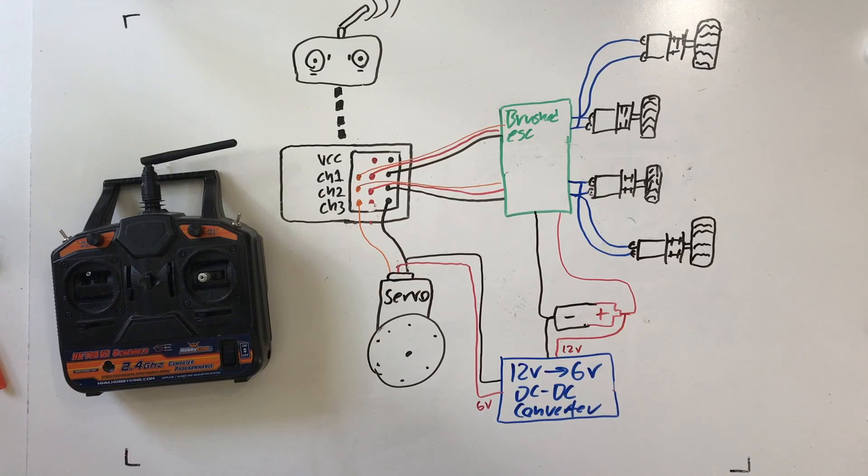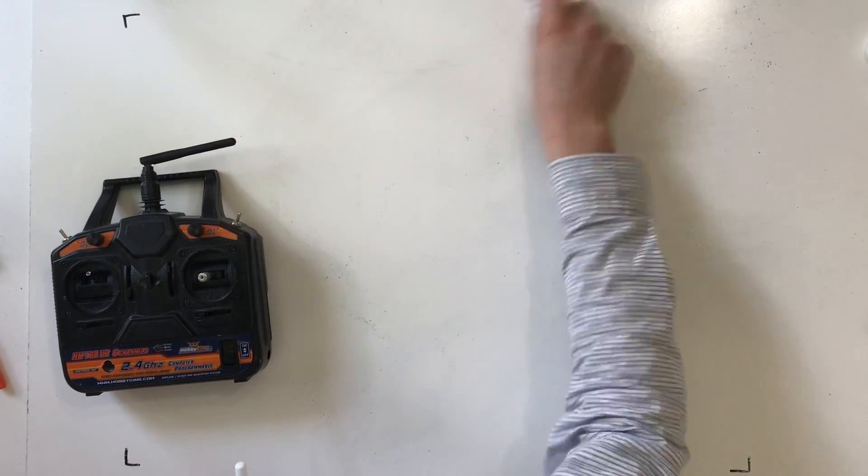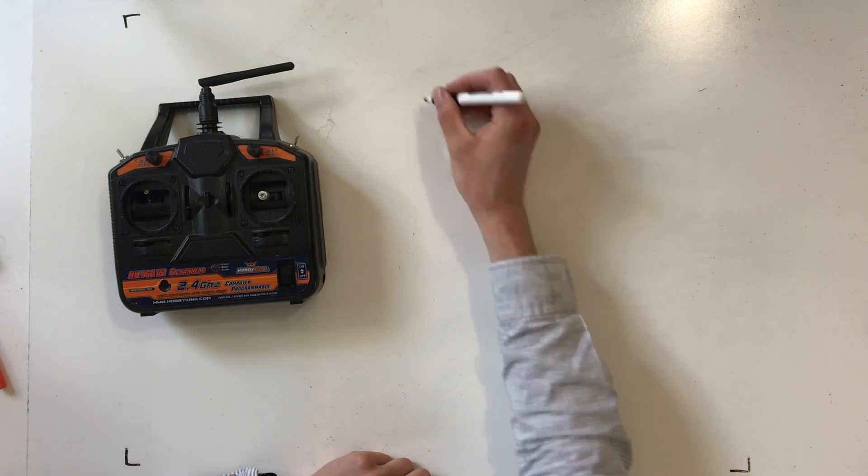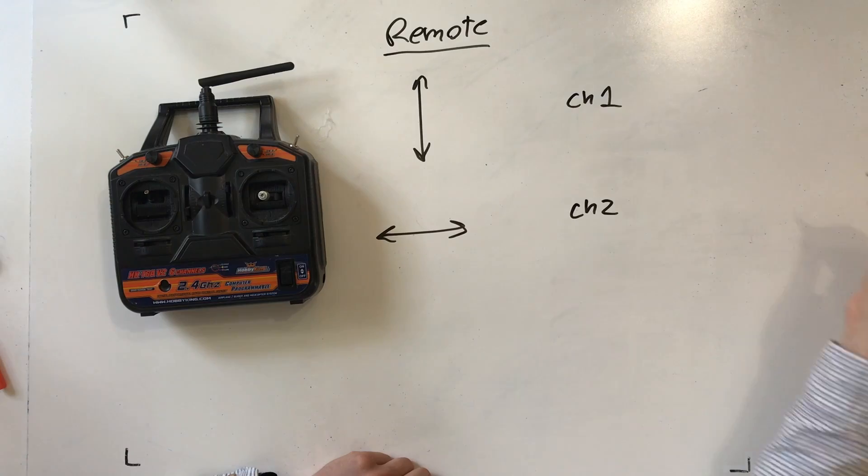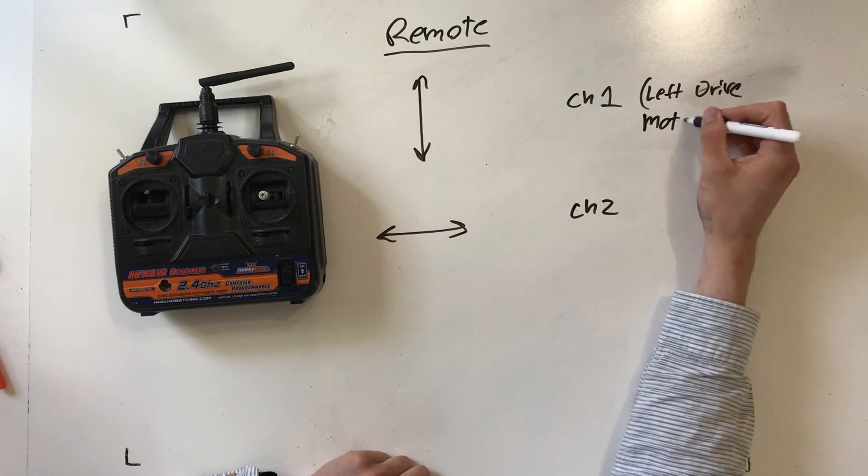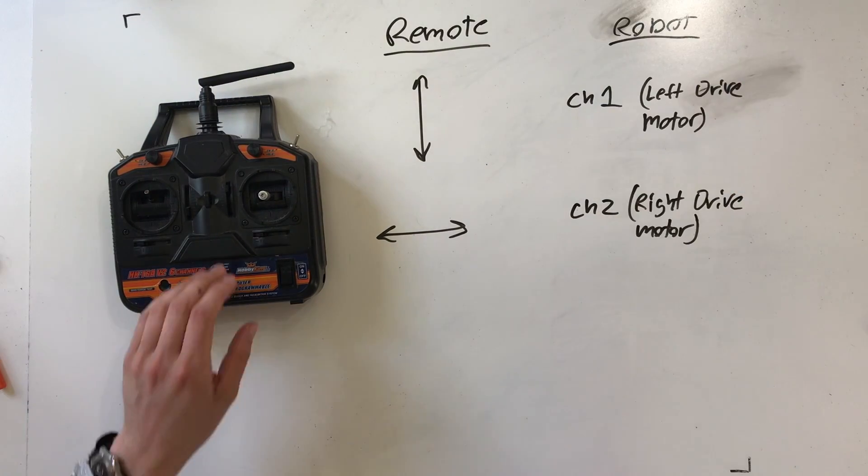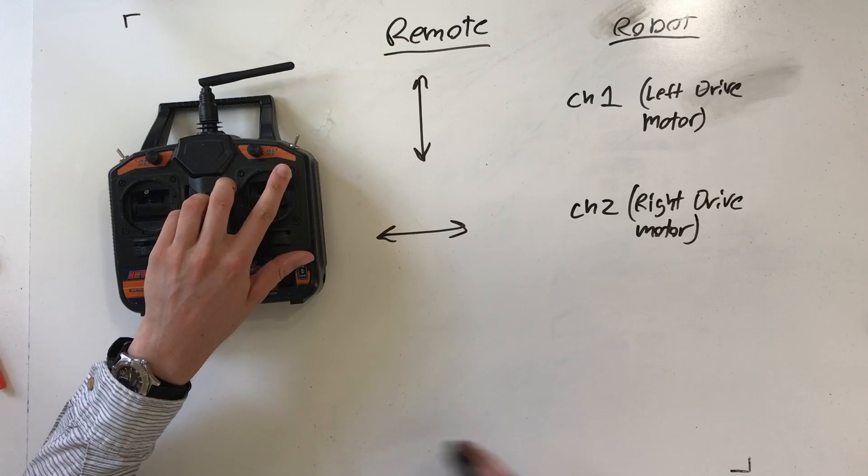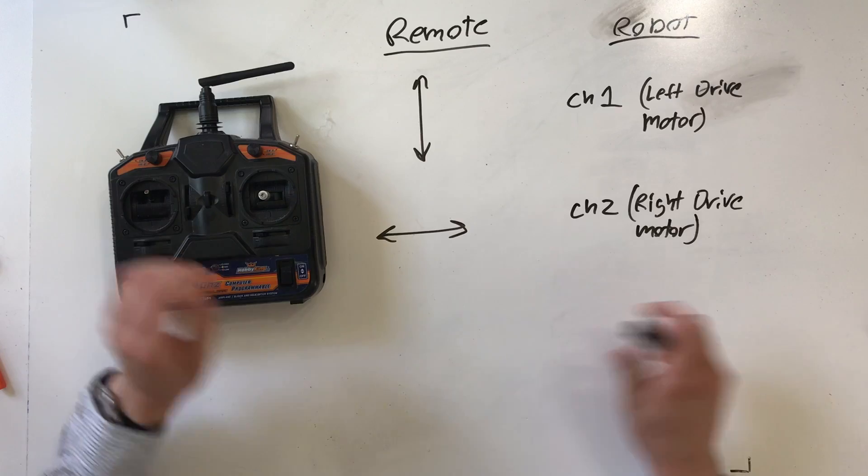Alright, so now I'm going to briefly try to explain channel mixing without the intricacies of how to set it up, because they'll depend on what remote you have. So on this remote, up and down on the right thumb stick controls channel 1, which is the left motor drive with the Crave. And right and left controls channel 2, which is the right motor drive. And so that's not a good way of doing things because you'd have to press the joystick upright to trigger both channels to drive the robot forward.